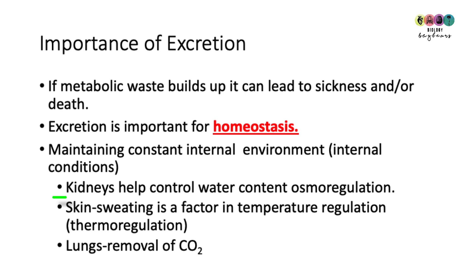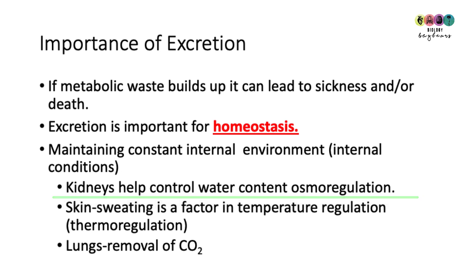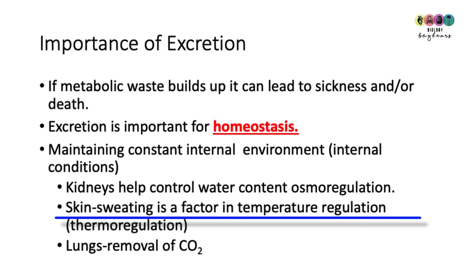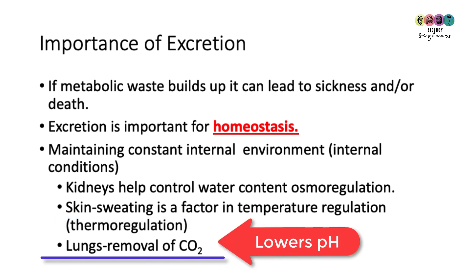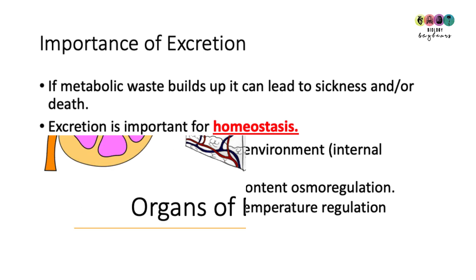The kidneys help to control water content, or osmoregulation. The skin, through sweating, helps in maintaining temperature — thermoregulation. And the lungs help with the removal of CO2. Remember, if CO2 builds up in the blood it affects the pH — it lowers the pH.